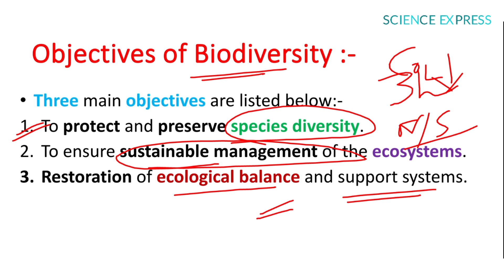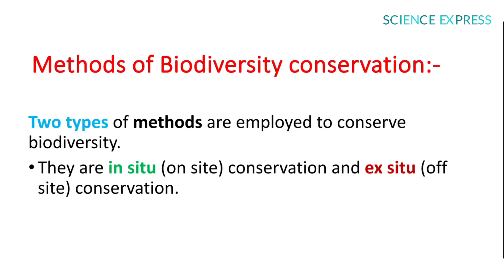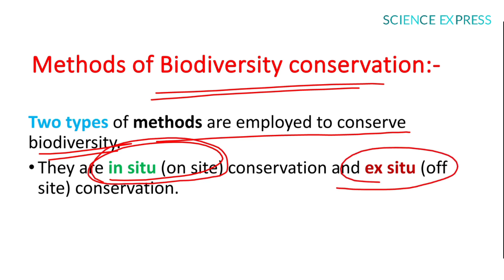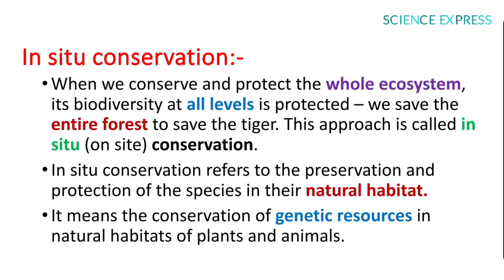The three main objectives are: to protect and preserve species diversity, to ensure sustainable management, and restoration of ecological balance. Two types of methods are employed to conserve biodiversity: in-situ, meaning on-site conservation, and ex-situ, meaning off-site conservation.